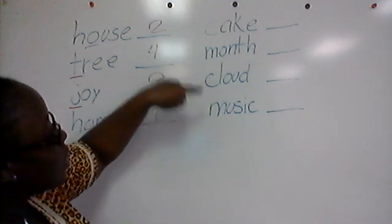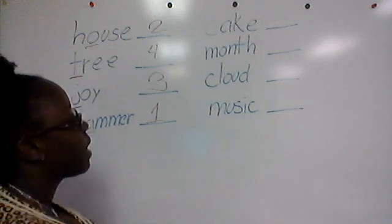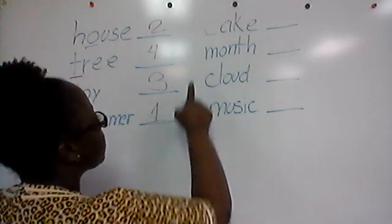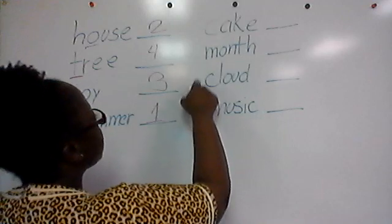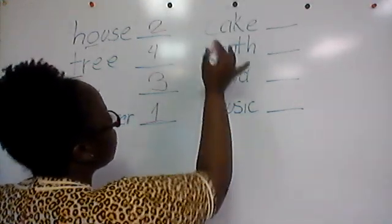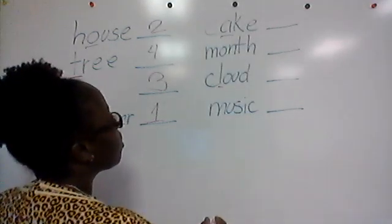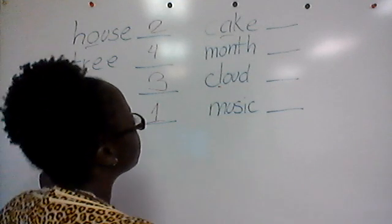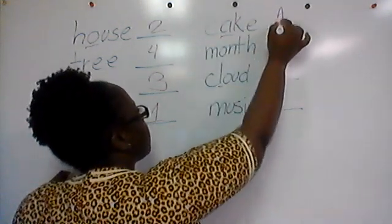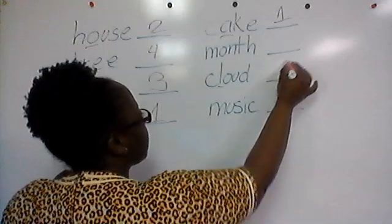Alright — cake, month, cloud, and music. Let's sing the alphabet: A B C — ding ding ding, we got C. But we also have C down here — cake and cloud — so I'm going to underline the next two letters in those words. A is the first letter of the alphabet, so cake comes first, and then cloud.